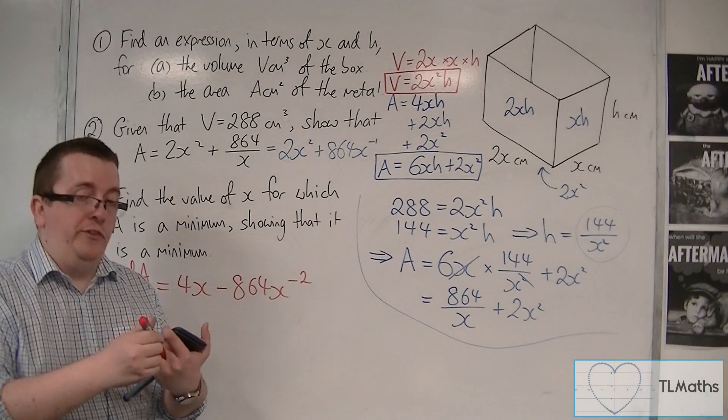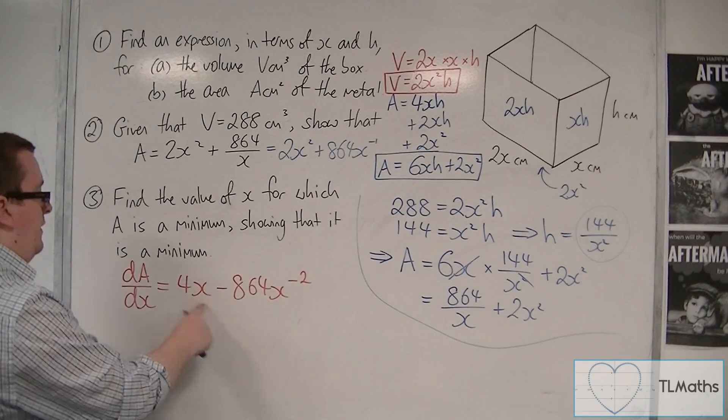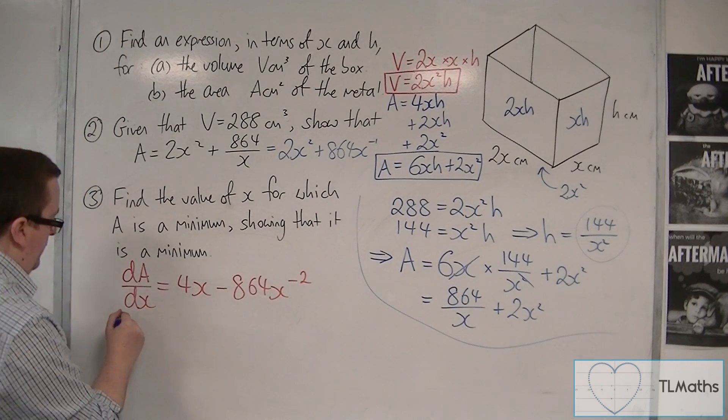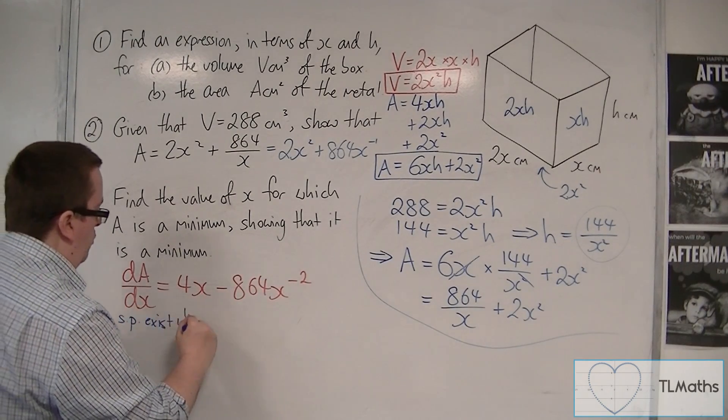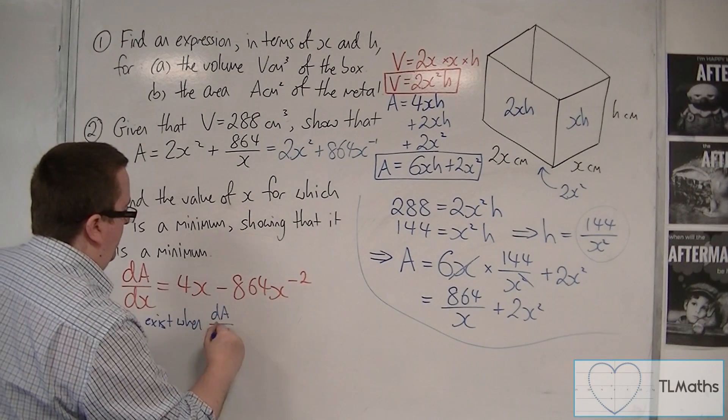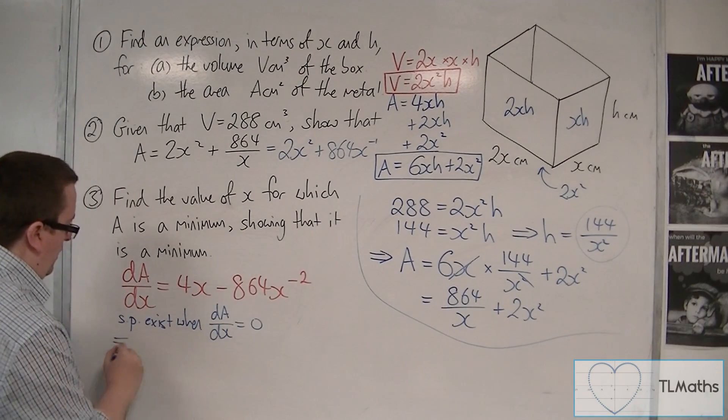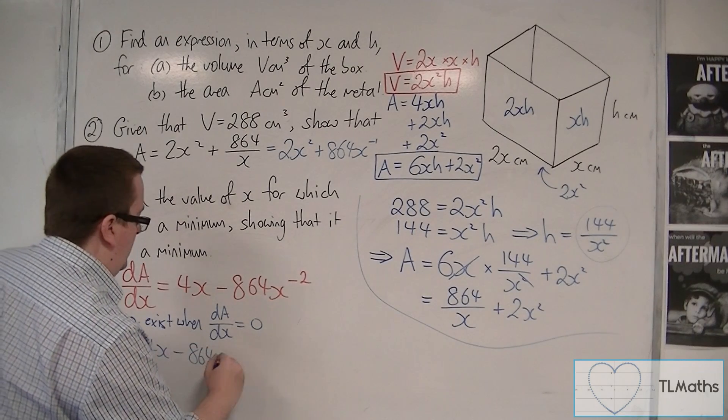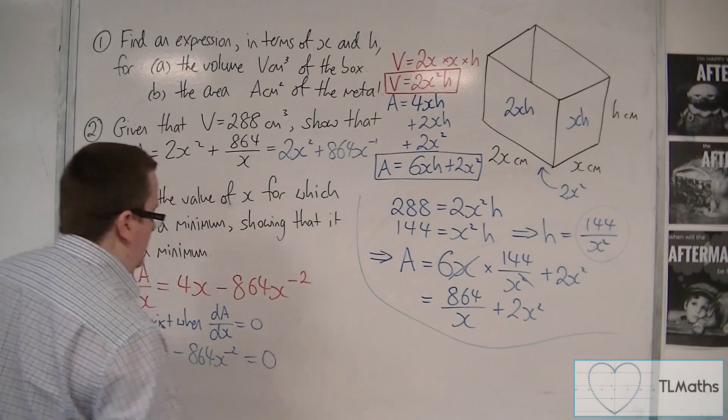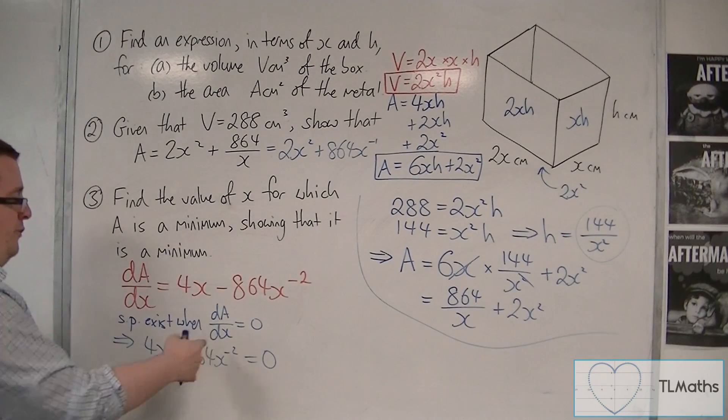Now, stationary points are going to exist when this is 0. So, stationary points exist when dA by dx is 0. And so I'm going to put the 4x minus 864x to the minus 2 equal to 0. And now I need to solve this equation.